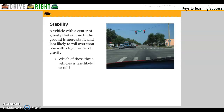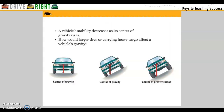A vehicle with a center of gravity that is close to the ground is more stable and less likely to roll over than one with a high center of gravity. Which of these three vehicles is less likely to roll? A vehicle's stability decreases as its center of gravity rises. How would larger tires or carrying heavy cargo affect a vehicle's center of gravity?